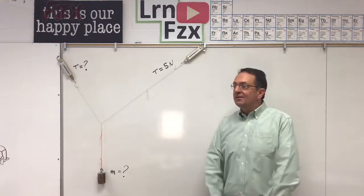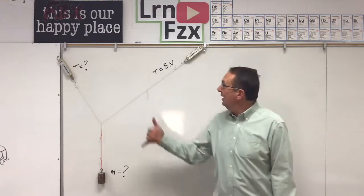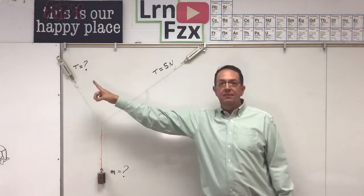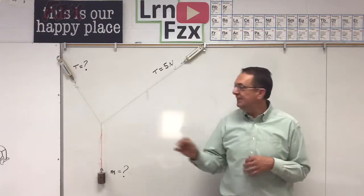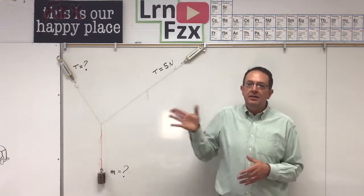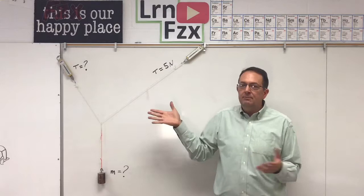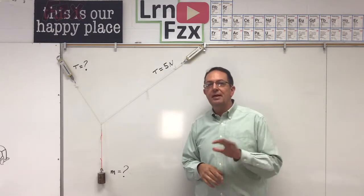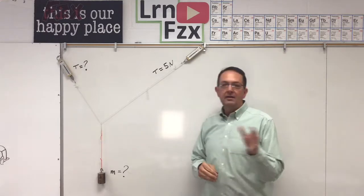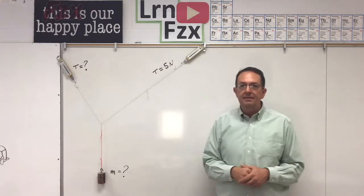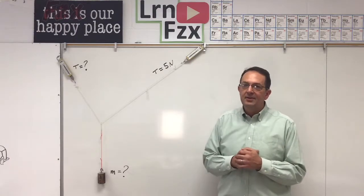This right here is a fun little static equilibrium problem. I'm going to give you one of these forces and you'll have to find that force and that force. Now the center of this thing is this knot right here, three forces acting. It's in a vertical plane and all three of those things add up to zero. Using your best trigonometry, not calculus, you'll be able to solve this problem for that tension and that mass. Let's learn physics.